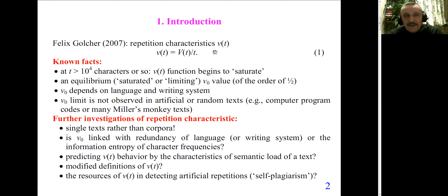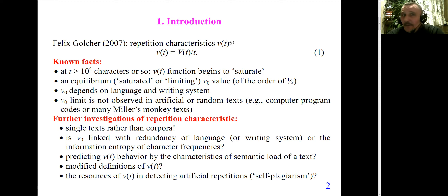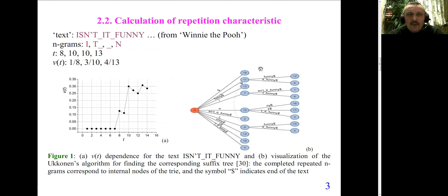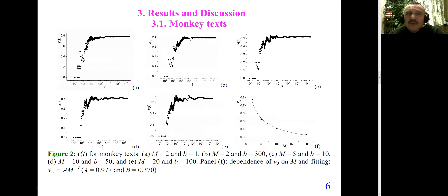This is a very simple definition. Up to date, a number of facts have been already known about this characteristic V(t). It is known that the V(t) function for so-called natural text has a feature which can be termed as saturation. In simple words, this is a property when the V(t) function becomes something of equilibrium.